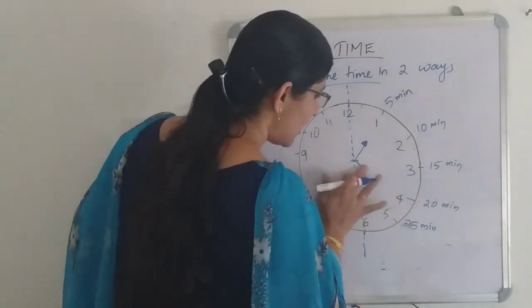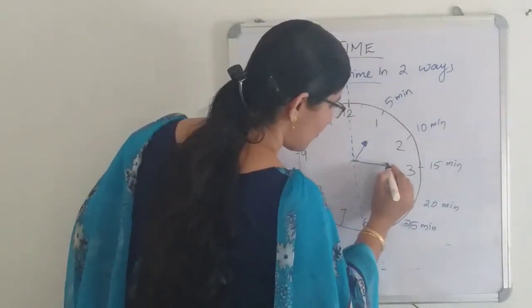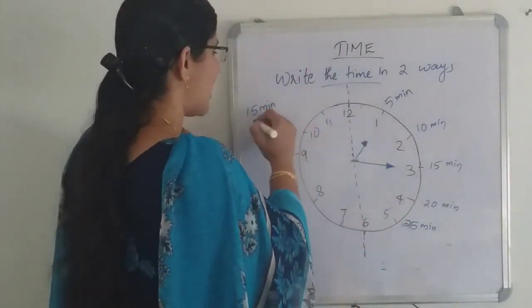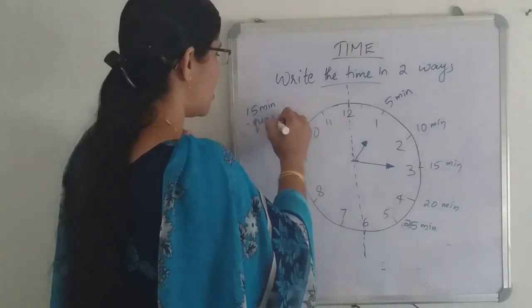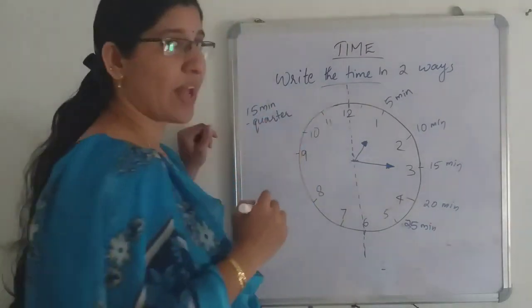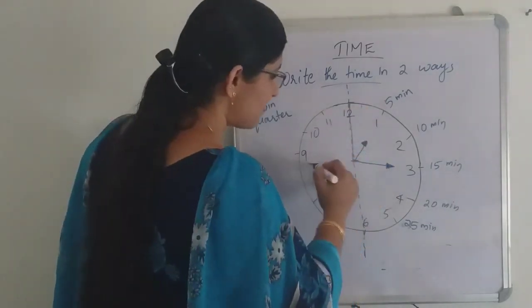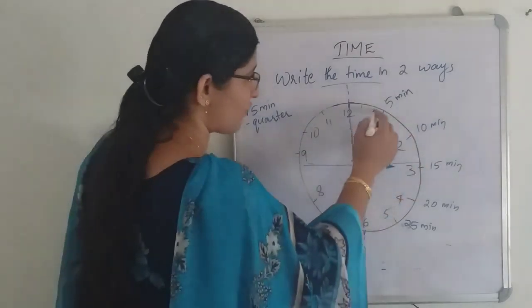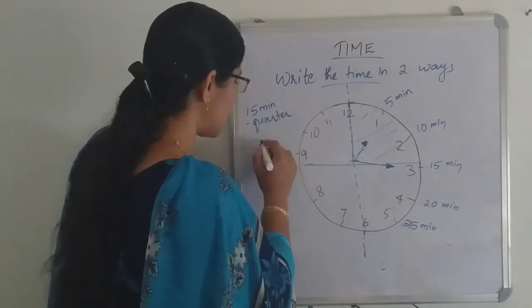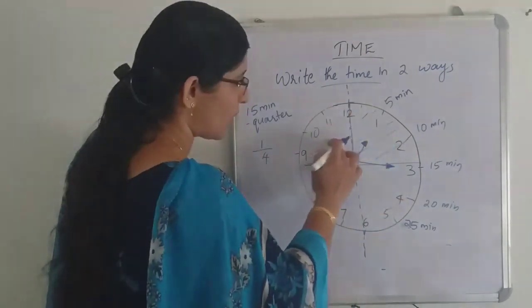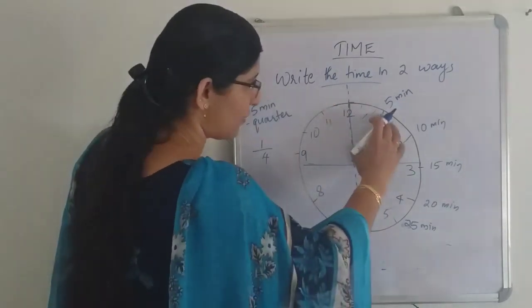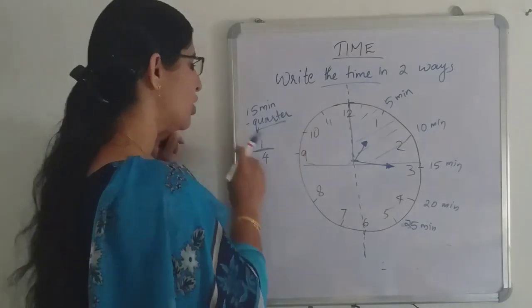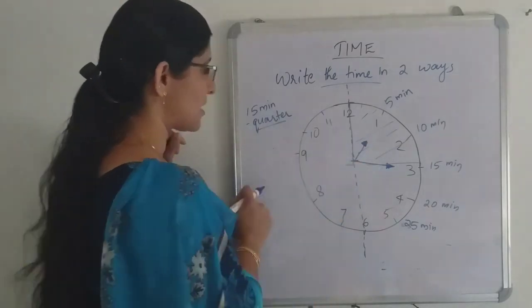There is a slight difference when the minute hand leads to 15 minutes. This 15 minutes has another name: quarter. If we divide the clock into 4 pieces, each piece is one-fourth, and another name for one-fourth is quarter. So whenever the minute hand reaches 15, we use the word 'quarter.'